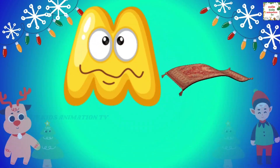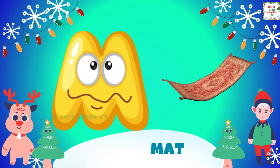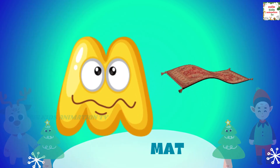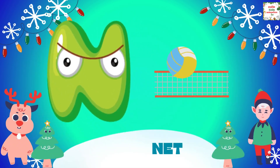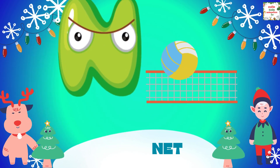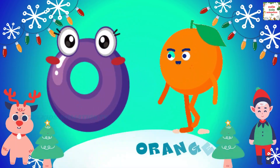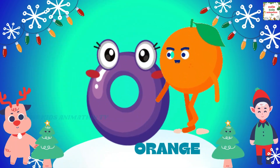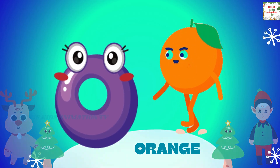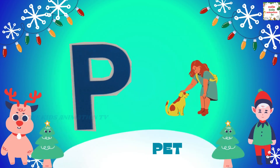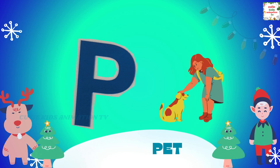M is for mat, m-m-mat. N is for net, n-n-net. O is for orange, o-o-orange. P is for pet, p-p-pet.